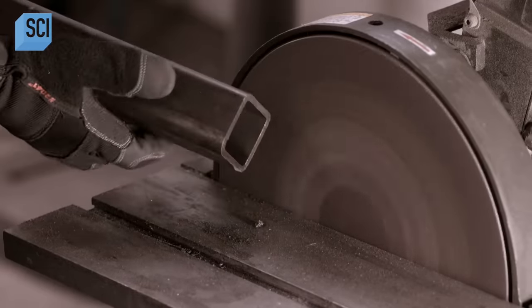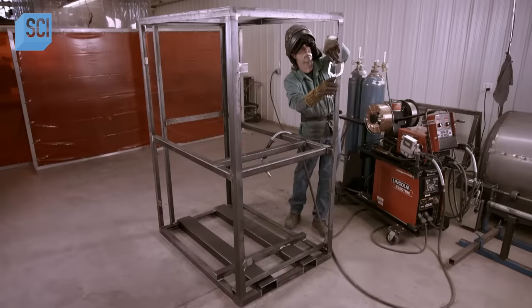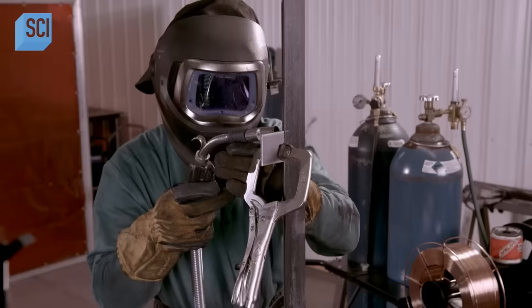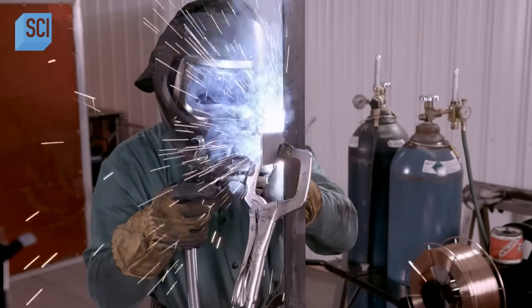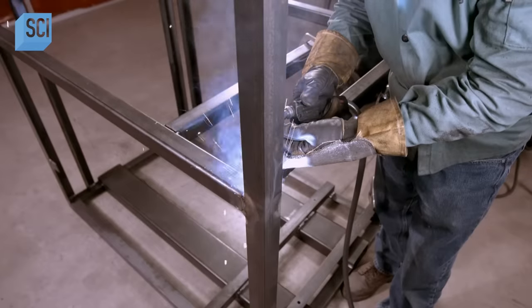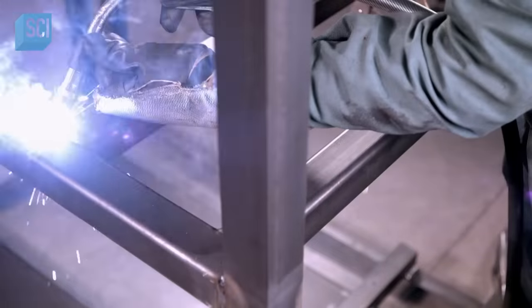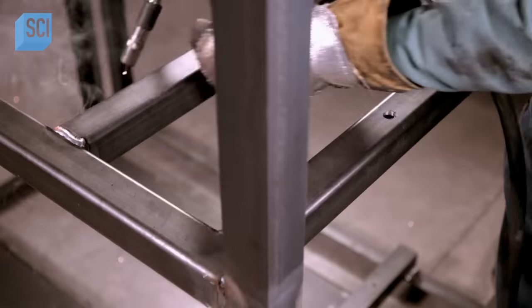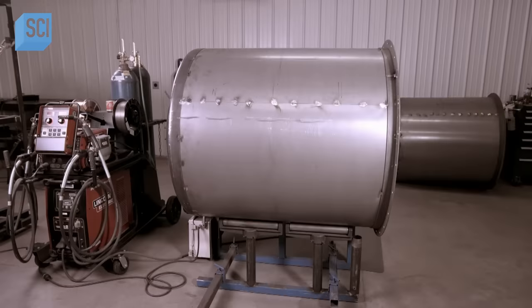The first vessel automatically kicks into a regeneration cycle, which blows fresh air through the pellets to remove the CO2 molecules and exhaust them out the building. When the second vessel's pellets max out, vessel one resumes scrubbing, while vessel two regenerates.